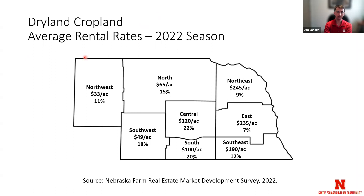Overall, the dryland average cash rental rates — cropland that is not irrigated — for the 2022 season: we've seen certain pockets in the east with only a 7% increase, single digits in some areas, sometimes double digits in the western part of the state. Keep in mind, an 11% change on $33 an acre is only about $3, versus a 10% change on $245 being over $20 an acre. So it really depends on where you're at and how the percent change impacts the dollar amount.